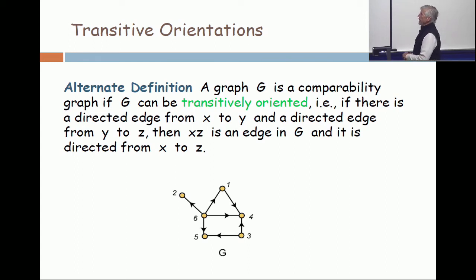Here is an alternate definition of a comparability graph. A comparability graph is a graph that can be oriented—the oriental graph means just put a direction on the edges—in such a way that the ordering is transitive.